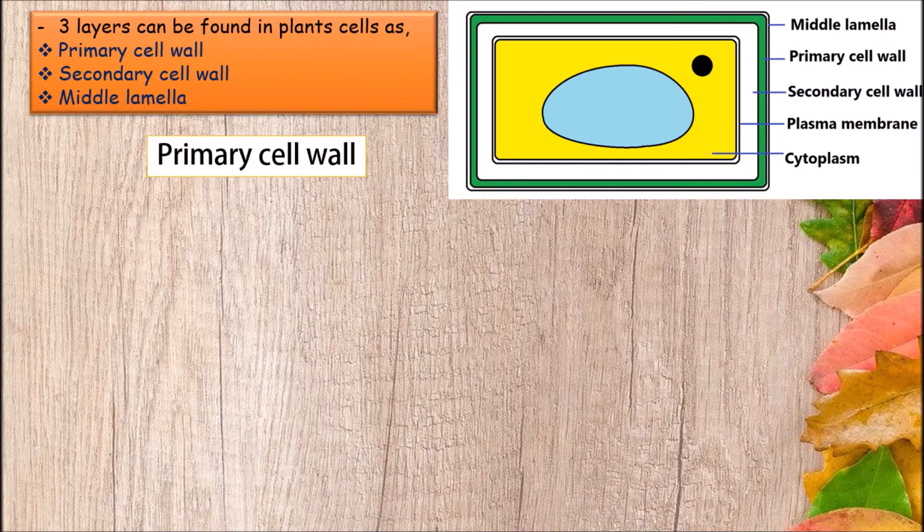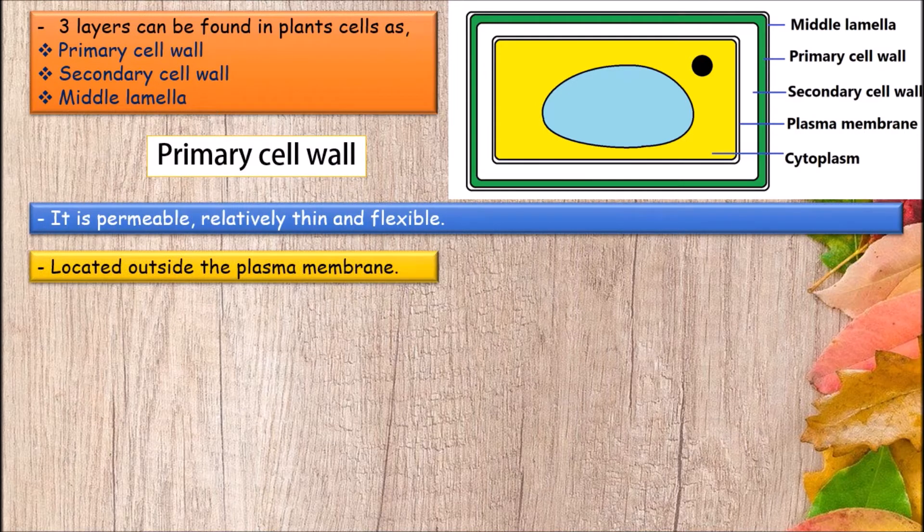Primary cell wall is permeable, relatively thin and flexible, which is on the outside of the cell membrane. The middle lamella is laid down first, formed from the cell plate during cytokinesis, and the primary cell wall is then deposited inside the middle lamella.